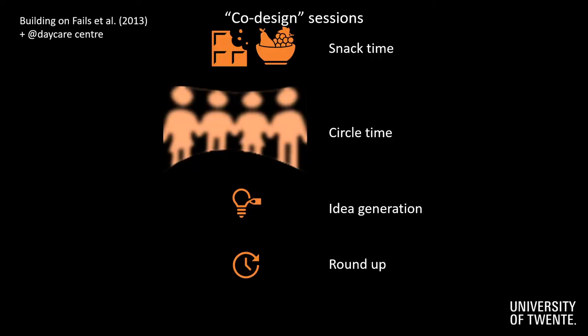Building strongly on related work, at the core of our process were four co-design sessions. We did these at a daycare center, with which we have a recurring arrangement. For these sessions, we followed a paradigm of snack time, during which we were introduced. We then started with a circle time, where we got together and explained or reminded the children of the bigger picture of the project and the goal of that session. This was followed by idea generation, which was generating, selecting, and working out ideas as the focus. Often using post-its and felt-tip pens, where needed we helped in writing things down. At the end of the sessions, we planned a roundup, during which we explained what would happen with their work and what we would do in the next session.